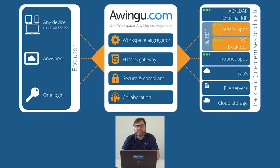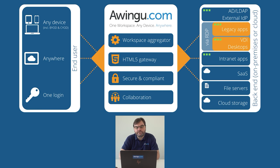Awingu itself is a virtual appliance that you can install on any kind of infrastructure. So it can be installed on premise on VMware, Hyper-V, KVM, OpenStack, Nutanix, or any other infrastructure that supports these kinds of virtual images.